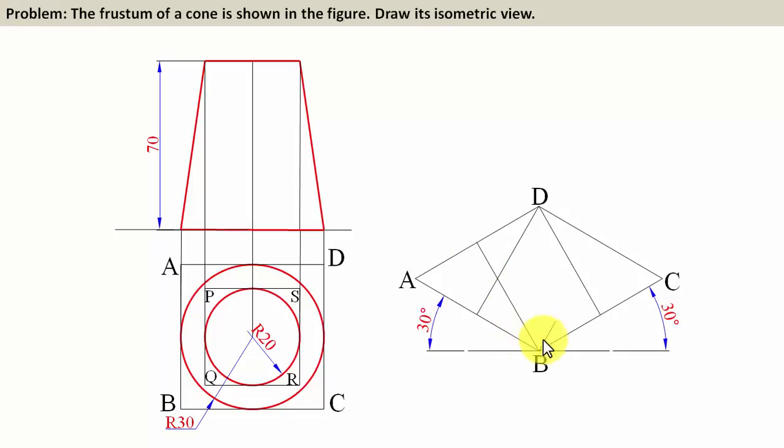Now it's going to be very simple. Take this as the center, draw an arc. Take this as the center, draw an arc. This is the center, draw an arc. That's it—that's the isometric view of a circle, or rather, the bottom circle.